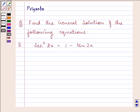Let us start with the question that is given to us in this session. It says, find the general solution of the following equation. The equation given to us is sec²2x = 1 - tan 2x.